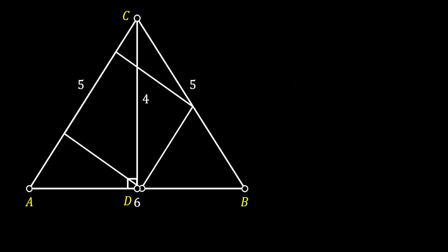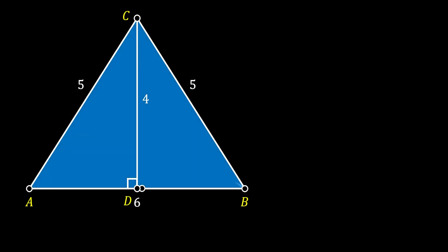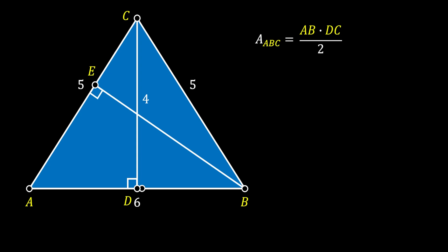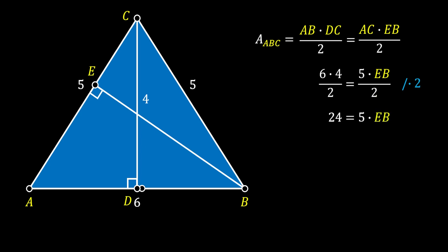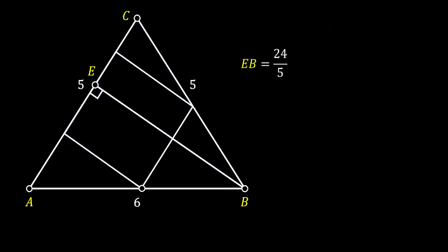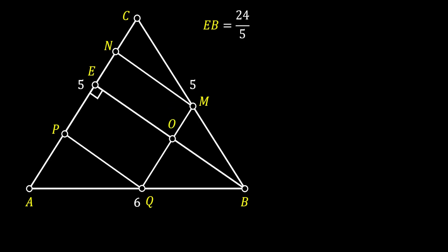Now let's continue by taking a look at our isosceles triangle ABC. We will pull the height from vertex B up to the left leg and label this intersection as E. We know that the area of a triangle equals base times height divided by 2, so in our case this is AB times DC over 2. We can also get the area as the product of leg AC and height EB. Substituting values and simplifying, we get 24 equals 5 times EB, so EB equals 24 over 5. Now let's label all the vertices of our square as P, Q, M, and N, label the intersection between line EB and side QM as O, and label the side of our square as S.